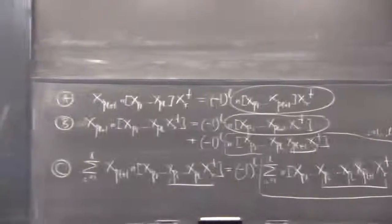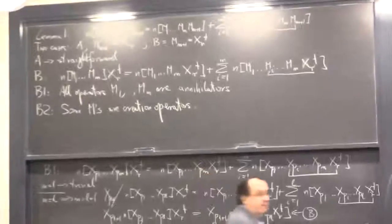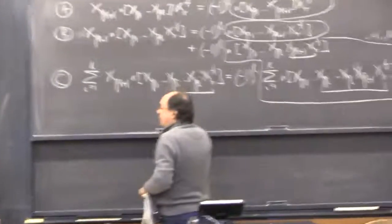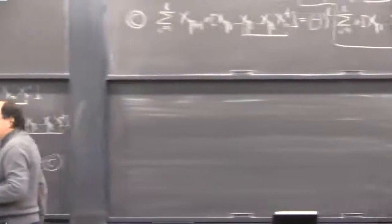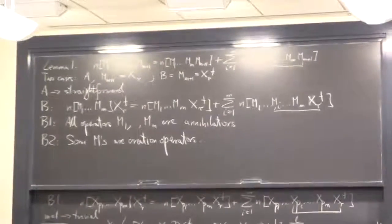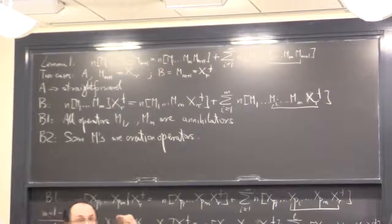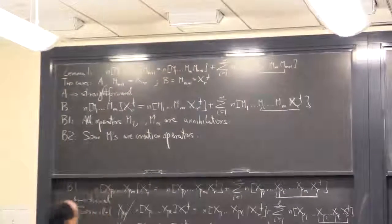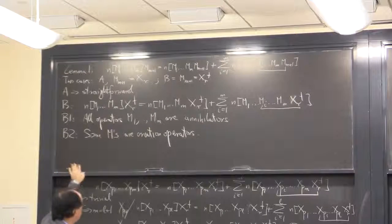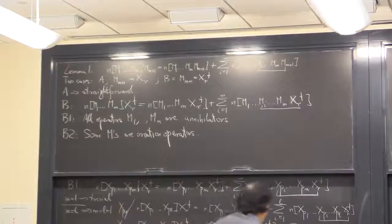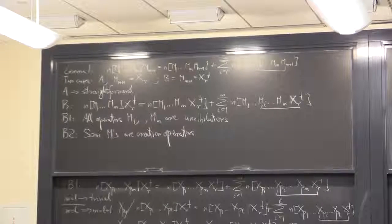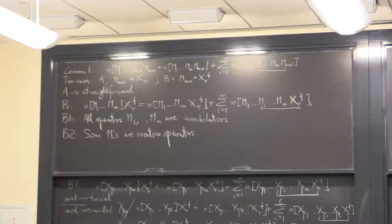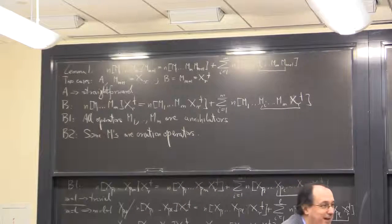We are now at the point where we can go to case B2 — what happens in our lemma when some operators M in the normal product are creation operators. What I'm going to do is apply a permutation to both sides which places the creation operators in the M_1 through M_M bunch to the left, as one normally does in the normal product.